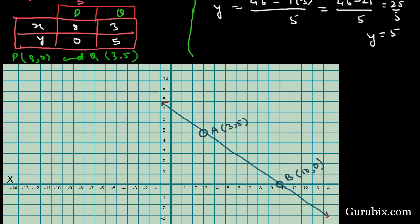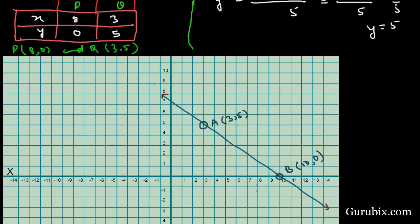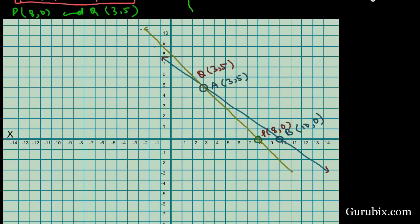Now we plot these points on the graph paper. Point P is at (8, 0) on the x-axis, and point Q is at (3, 5). We draw a straight line through these two points P and Q. This line represents 5x + 7y = 50.